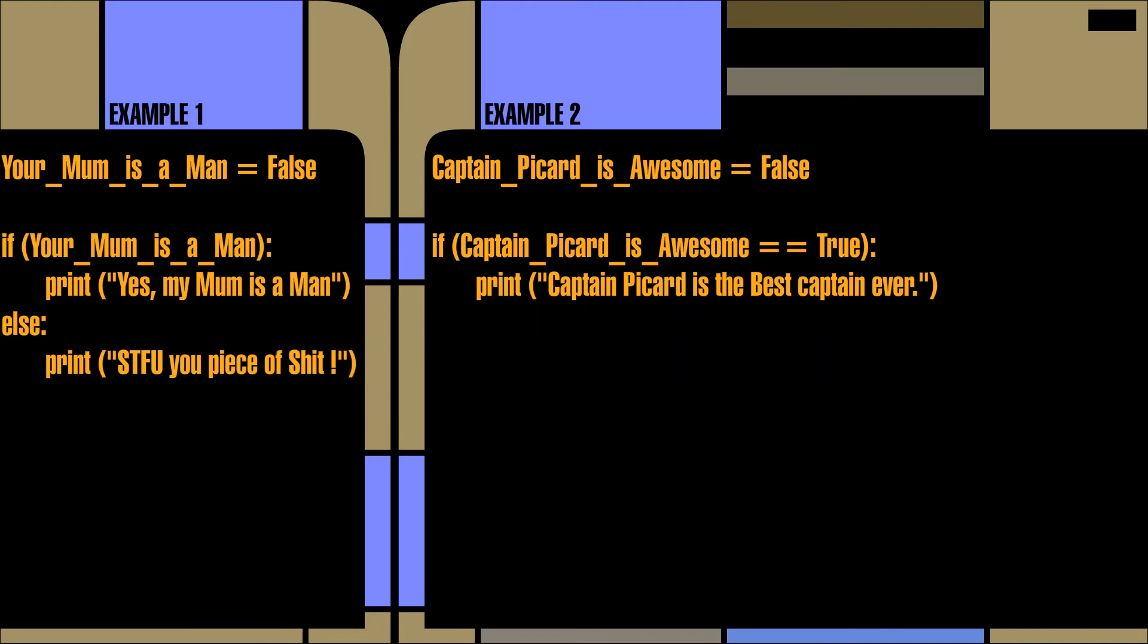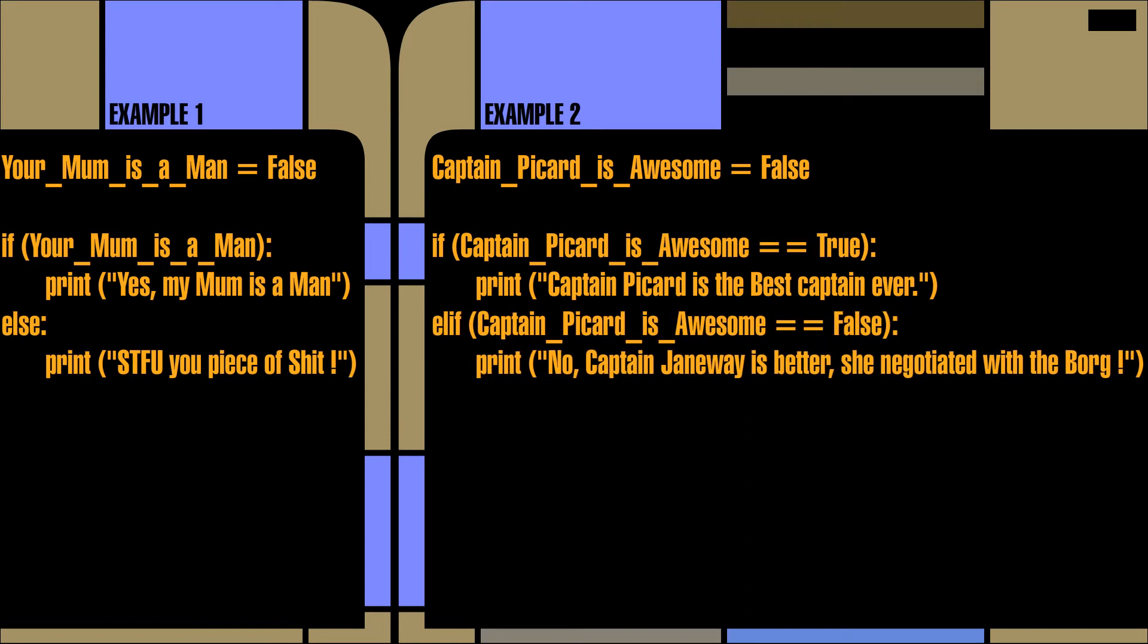Here is where the else statement comes in. By implementing the else statement, another set of instructions can be executed if the initial evaluation is false.